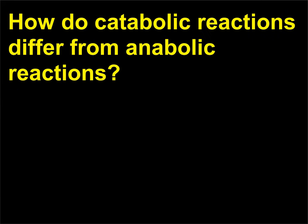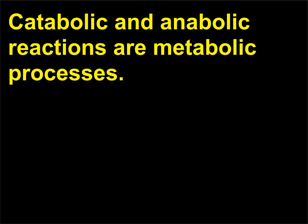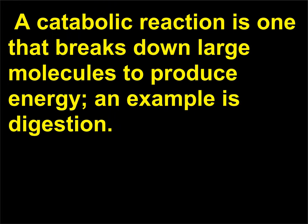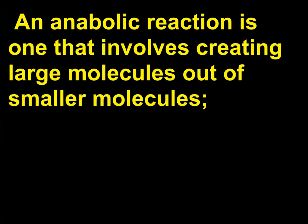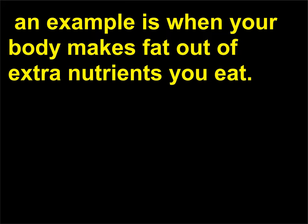How do catabolic reactions differ from anabolic reactions? Catabolic and anabolic reactions are metabolic processes. A catabolic reaction is one that breaks down large molecules to produce energy — an example is digestion. An anabolic reaction is one that involves creating large molecules out of smaller molecules — an example is when your body makes fat out of extra nutrients you eat.